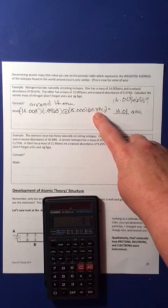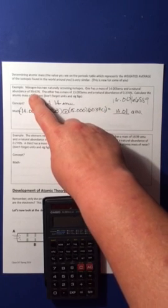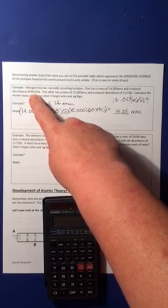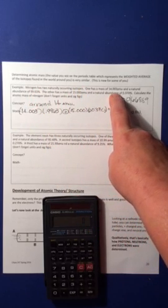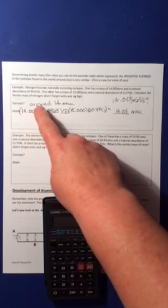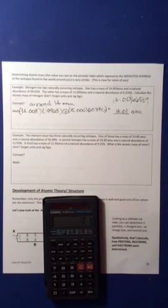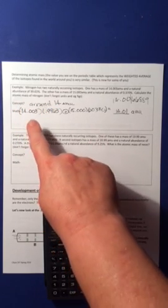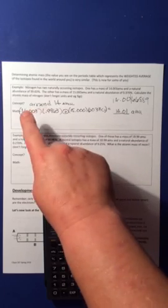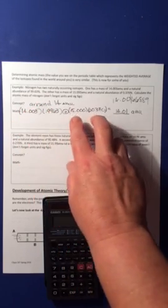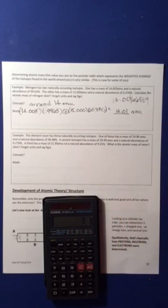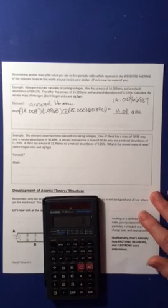So on this first problem, we have a concept that most of our isotopes have a mass of around 14. Therefore, our concept is that our answer should be about 14. So we did our calculation. Here's one isotope, so that's the first component. There's the second isotope, so that's the next component. And both of them add together to get 14.01 amu.